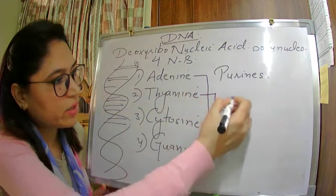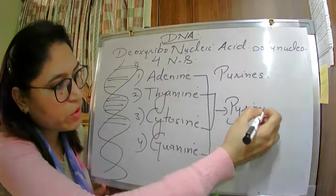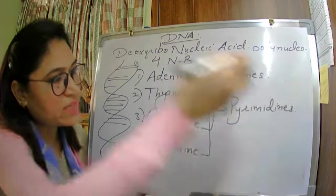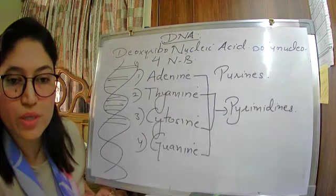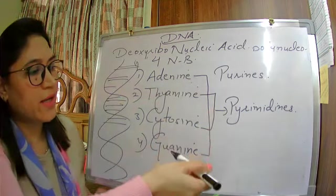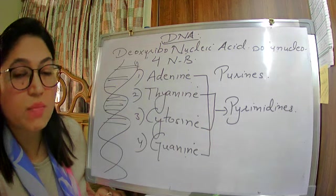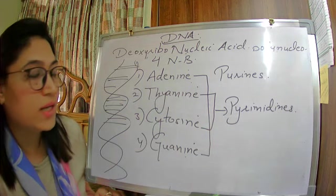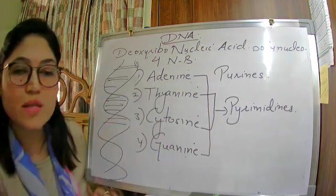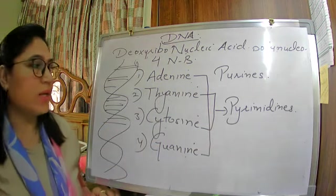Thymine and cytosine are called pyrimidines. If the exam asks you to name two purines of DNA, you will say adenine and guanine. If it asks for two pyrimidines present in DNA, you will write thymine and cytosine.